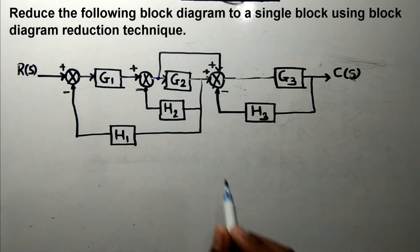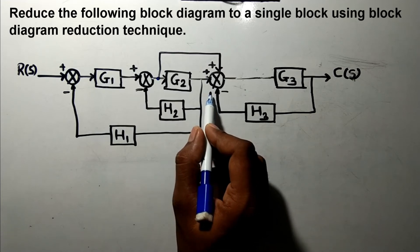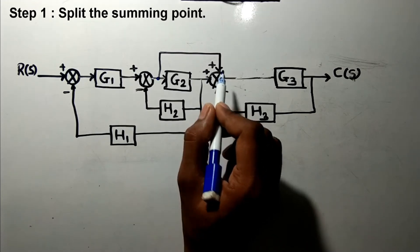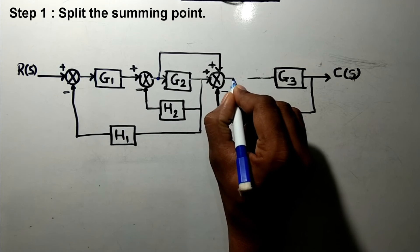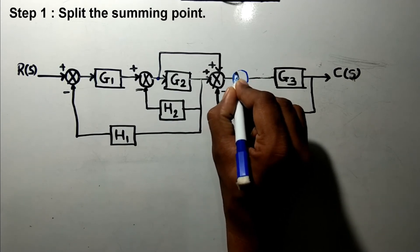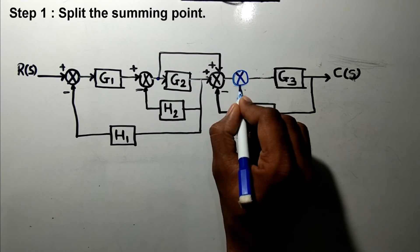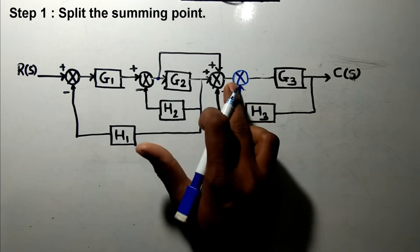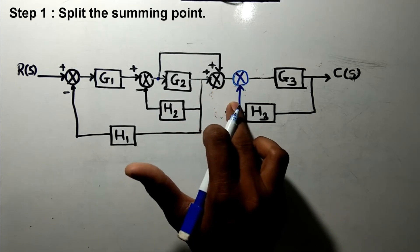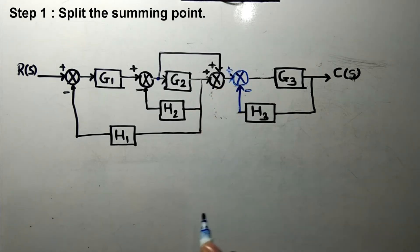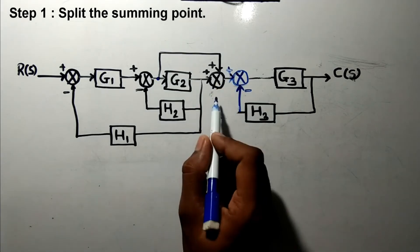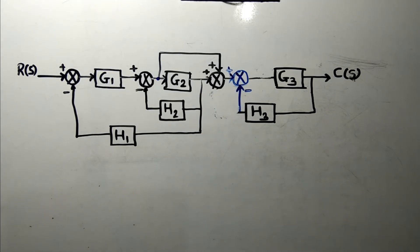Note that this block is also connected to this point, and therefore to simplify it, what we will do is split this summing point into two summing points so as to reduce the connection and avoid further complications. So our step number one is splitting the summing point — I am splitting it and connecting this summing point here, drawing a separate block diagram and connecting it like that.